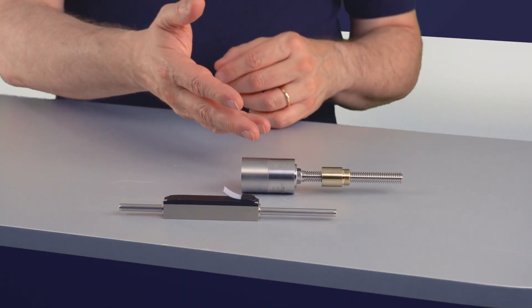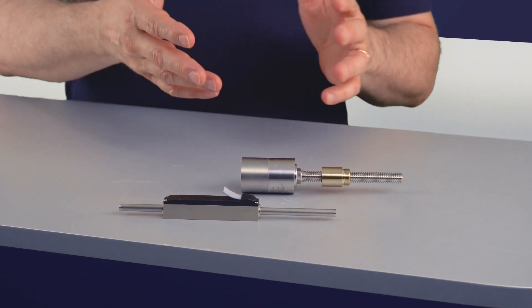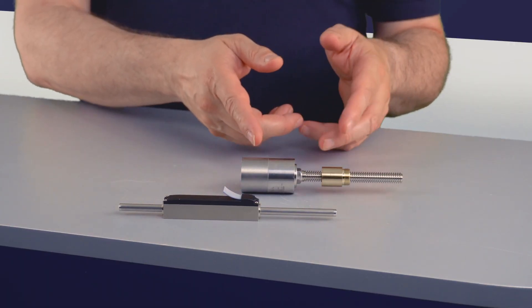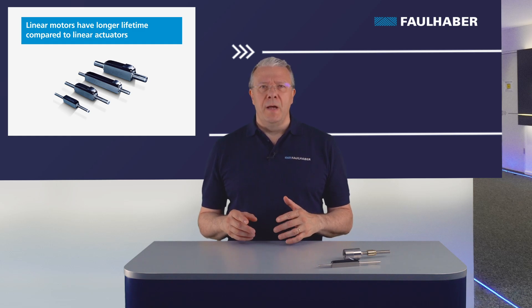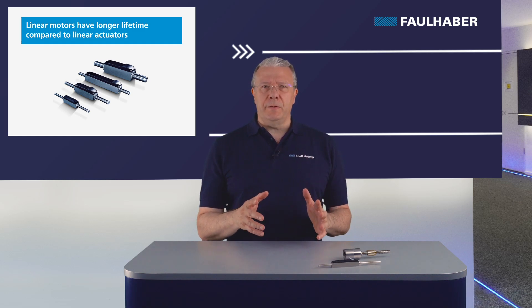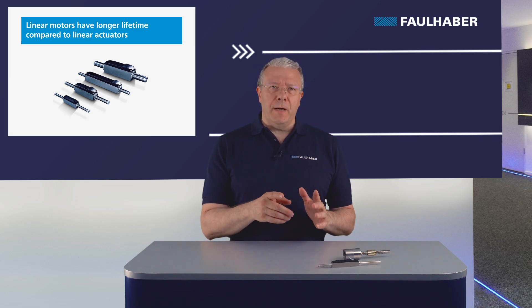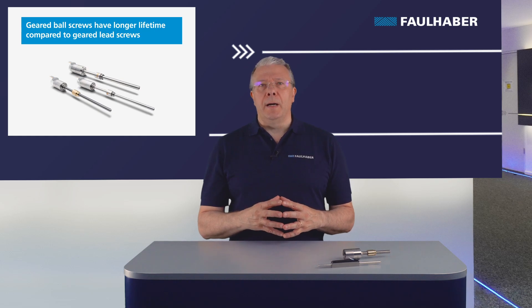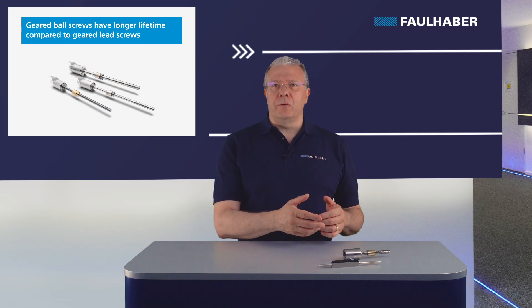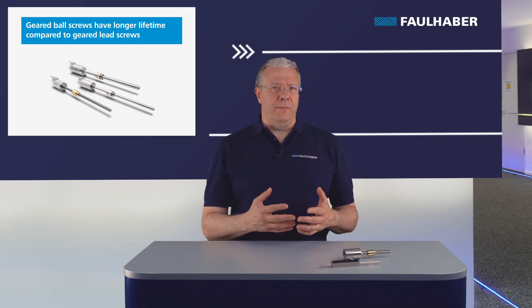For linear motion, you can choose between the linear motor and the linear actuator, consisting of a geared lead screw and ball screw. Linear motors have the longest life, with hundreds of millions of positioning cycles, thanks to the limited wear on the autolubricant polymer bearings. Among the geared linear actuators, more parts are involved.